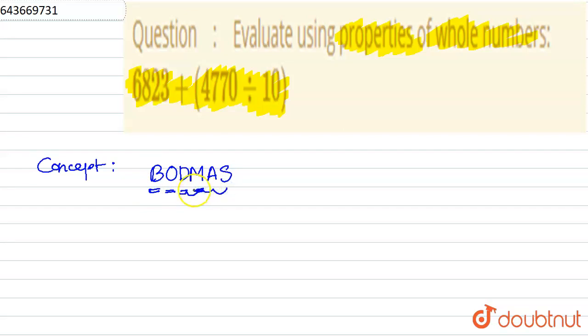So in our question we have 6823 + (4770 ÷ 10). According to the BODMAS rule, first of all comes the bracket, so we'll solve the bracket part first.